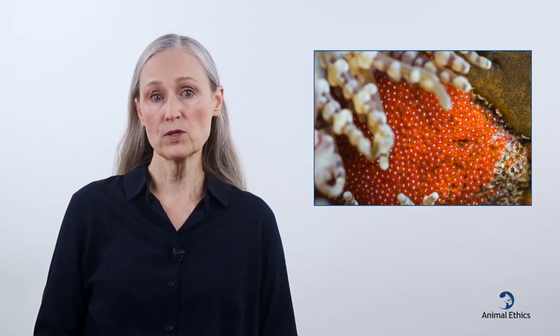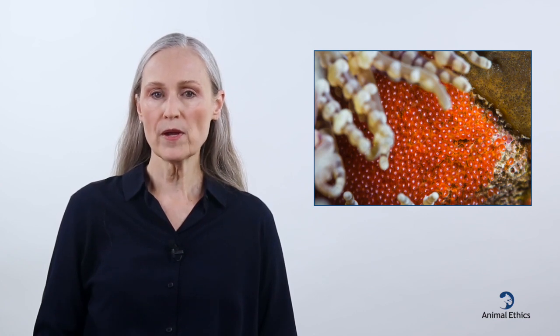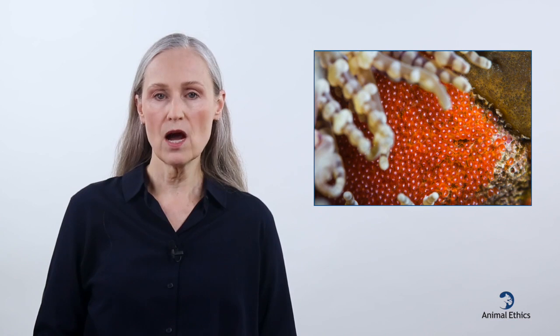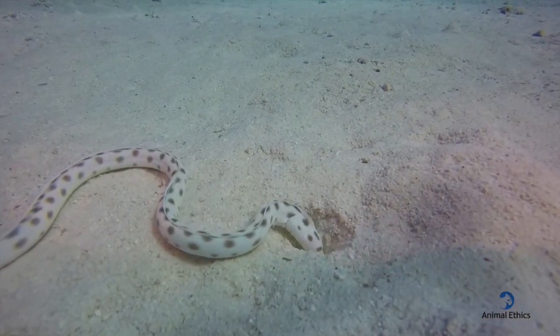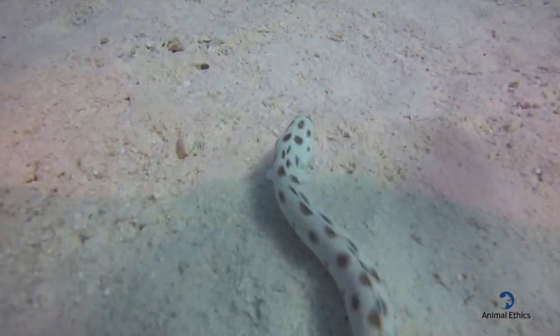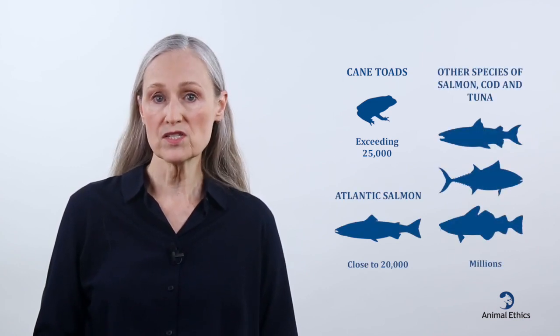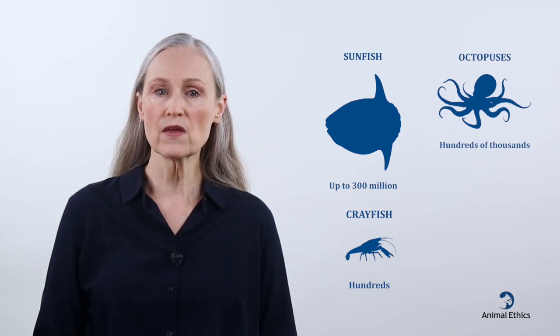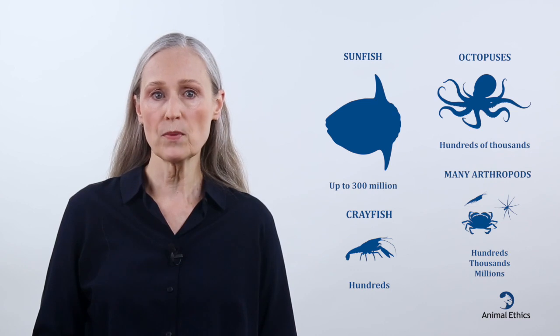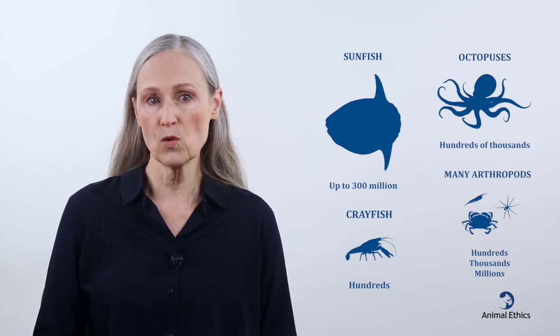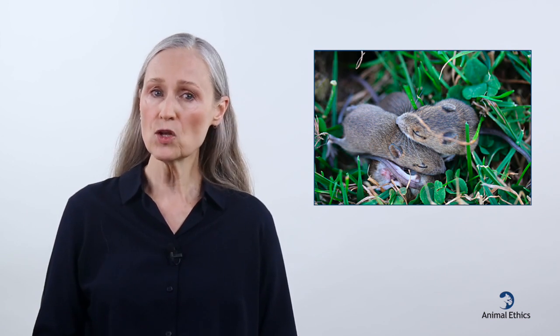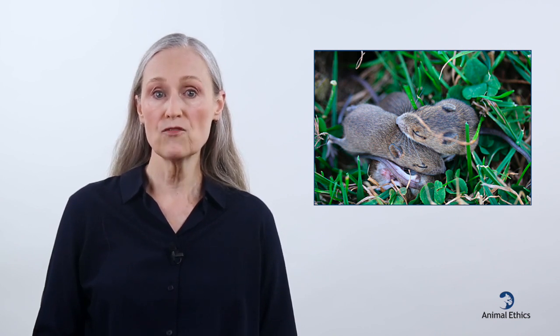In a stable population, assuming that the numbers of members of different generations remain similar, only one offspring per parent will survive to maturity and reproduce. Most other animals will die, often shortly after coming into existence. Most animals exhibit this reproductive strategy, including most species of invertebrates and fishes, amphibians, and reptiles. For example, common cane toads can have clutches exceeding 25,000. The Atlantic salmon might produce close to 20,000 eggs per clutch, while other common species of salmon, cod, and tuna reproduce in the millions. A sunfish can lay up to 300 million eggs. Among crustaceans, a crayfish can produce hundreds of eggs per brood, and among mollusks, octopuses can reproduce in the hundreds of thousands. Land-based invertebrates, including many arthropods, can lay hundreds, thousands, and in some cases millions of eggs at one time. Rodents, for example, can have more than 100 offspring in a lifetime.